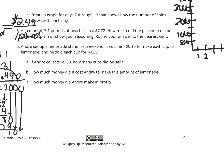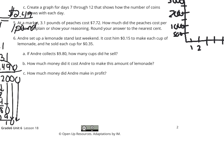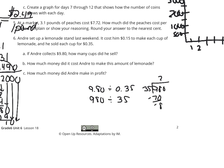Andre set up a lemonade stand last weekend. It cost him 15 cents to make each cup of lemonade, and he sold each cup for 35 cents. If he collects $9.80, how many cups did he sell? We take $9.80 divided by 35 cents, which becomes 980 divided by 35. 35 goes into 98 about 2 times, left with 70; bring down gives 280, which goes in exactly 8 times — so he sold 28 cups.